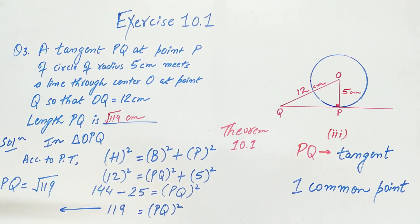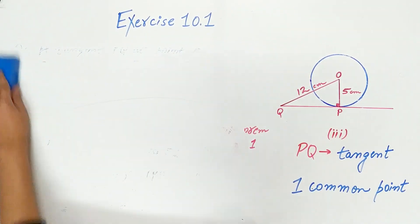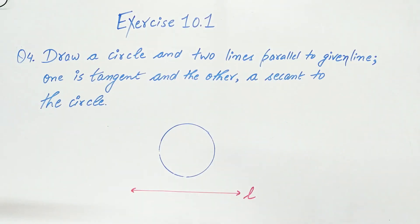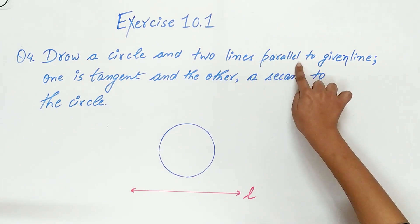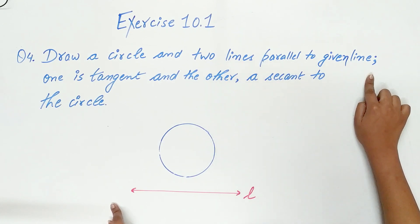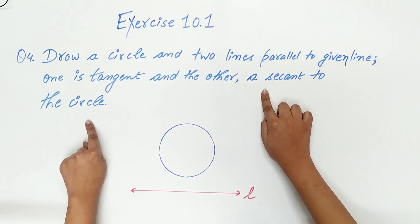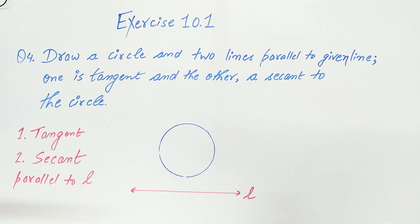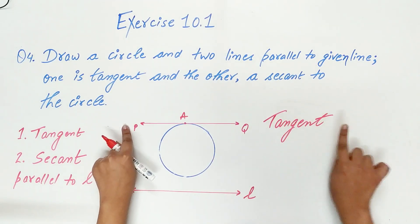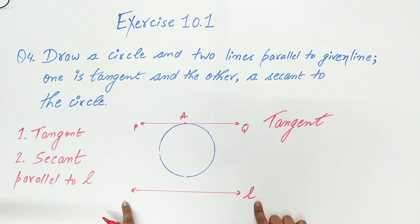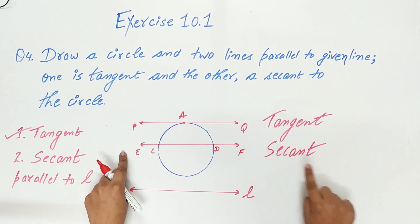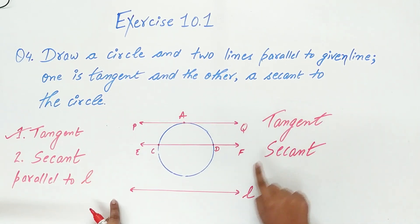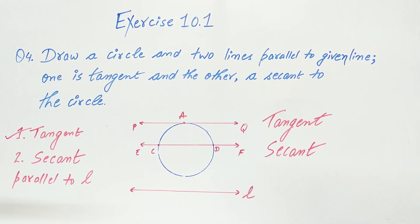Question 4 says: draw a circle and two lines parallel to a given line such that one is a tangent and the other is a secant to the circle. We have to draw a tangent and a secant parallel to line L. PQ is a tangent — there is only one common point — and it is parallel to line L. EF is a secant that intersects the circle. PQ is a tangent, EF is a secant, and all the lines are parallel to each other. This brings us to the end of Exercise 10.1.